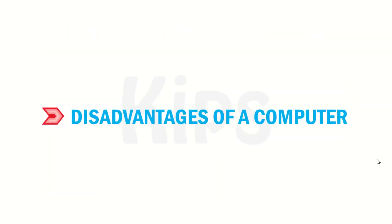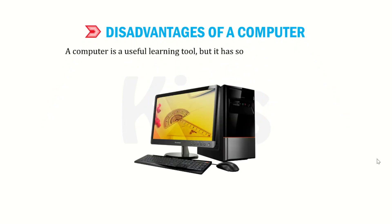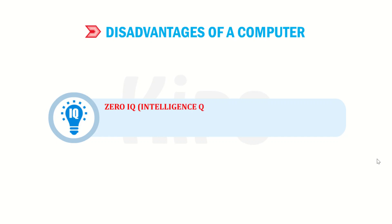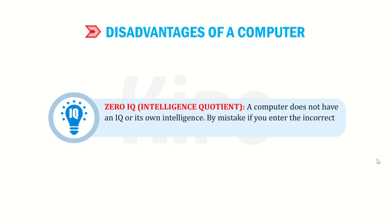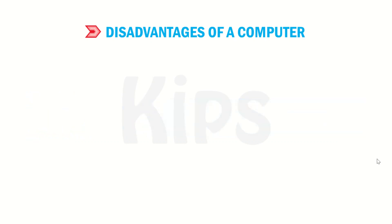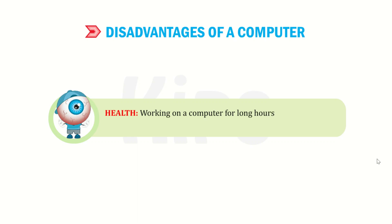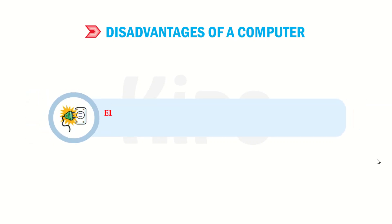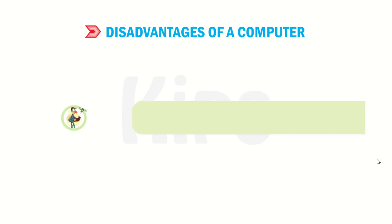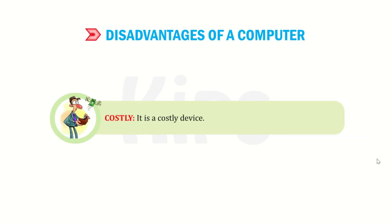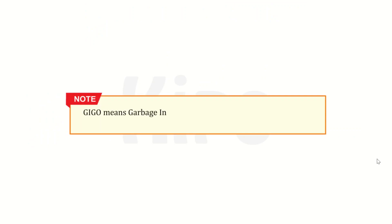Let us discuss the disadvantages of a computer. A computer is a useful learning tool, but it has some disadvantages too. Zero IQ — a computer does not have its own intelligence; if you enter incorrect input, it will give the wrong result. Health — working on a computer for long hours could affect your eyesight and can also cause obesity. Electricity — a computer depends on electricity and cannot work for a long time without it. Costly — it is a costly device. Note: GIGO means garbage in, garbage out — if you enter wrong input, the computer will generate wrong output.